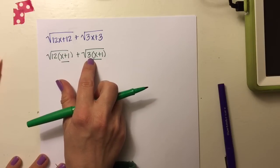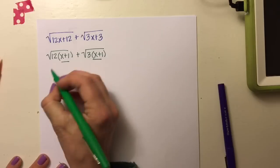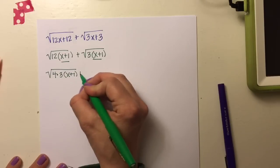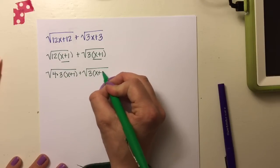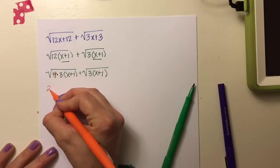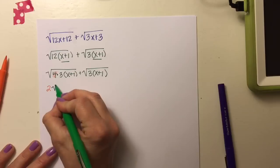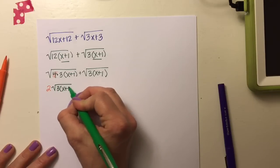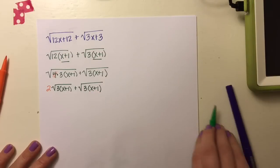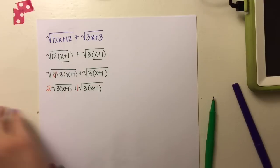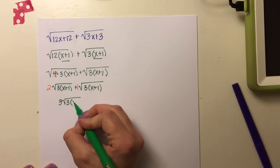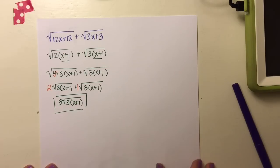There's nothing I can do to simplify the 3, but I can simplify 12 into 4 times 3. Since √4 = 2, the 2 comes outside, giving 2 times √(3(x+1)). The other term is 1 times √(3(x+1)). There's an implied 1 there, so adding them: 2 + 1 = 3 times √(3(x+1)), and we're done.